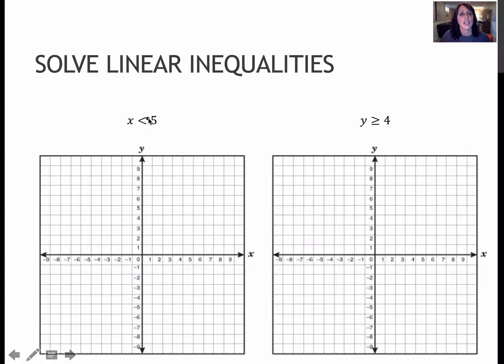So for the first one, if I were graphing x equals 5, because there's just one variable, I know the graph looks like this. So if it's an x equals equation, this is the x axis, so x equals 5 would go through here and be a nice straight line.